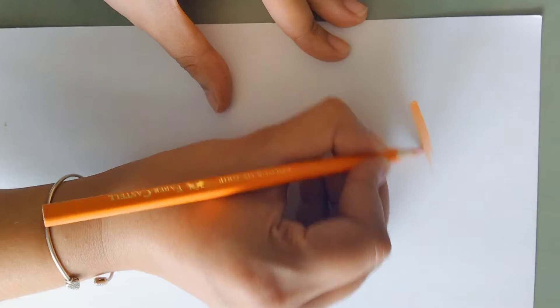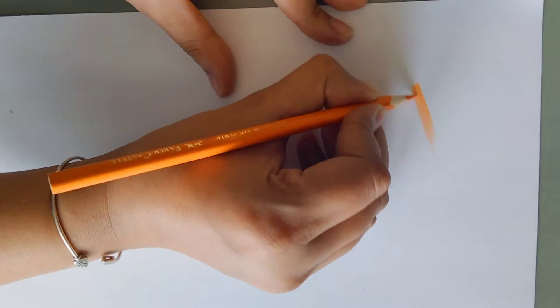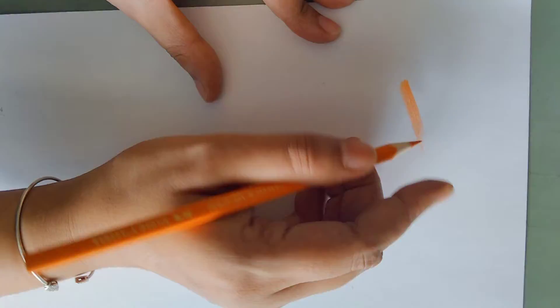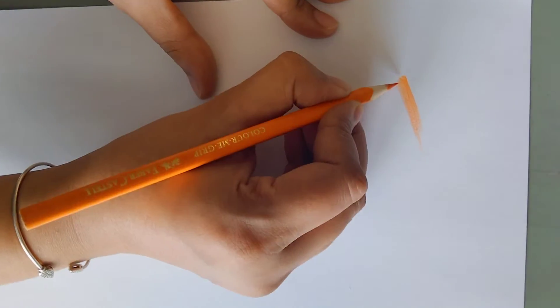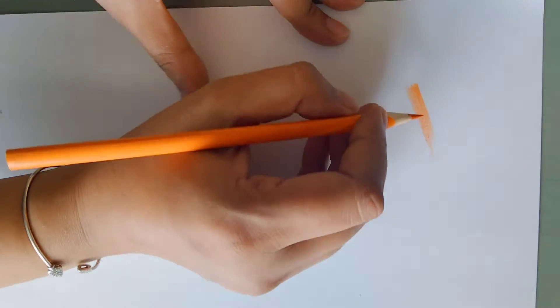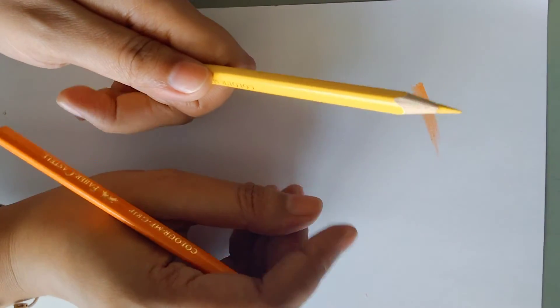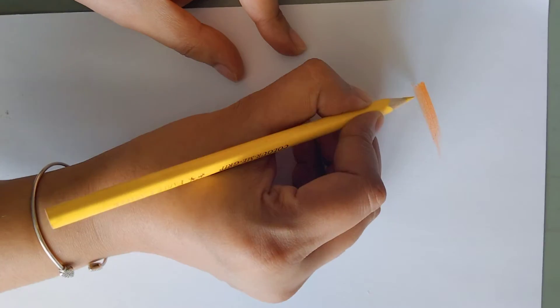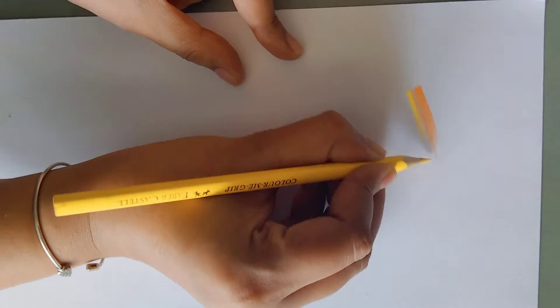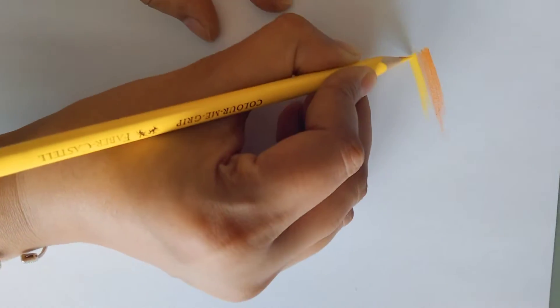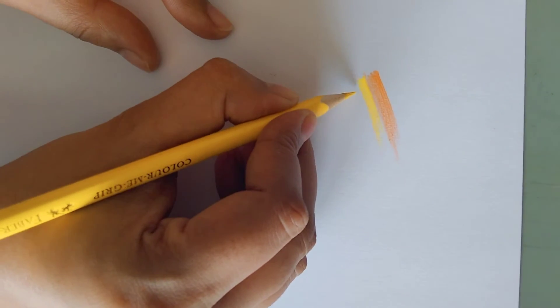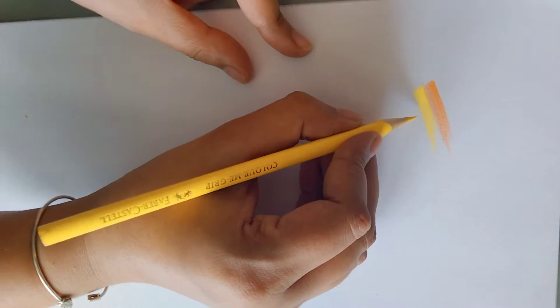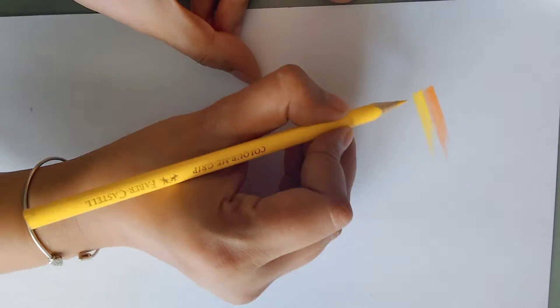First, apply strokes and then merge them. Students, please do not use harsh pressure with the pencil on the paper. Carefully apply the strokes, and next apply the second color, yellow. Now you can see the shading.